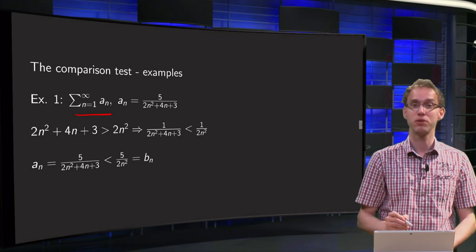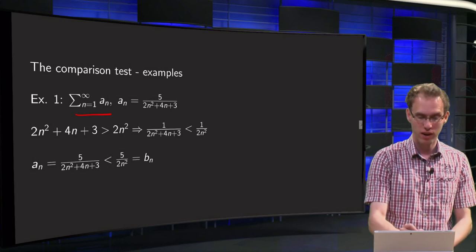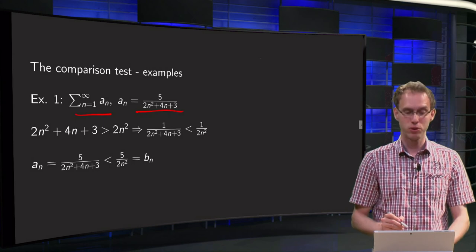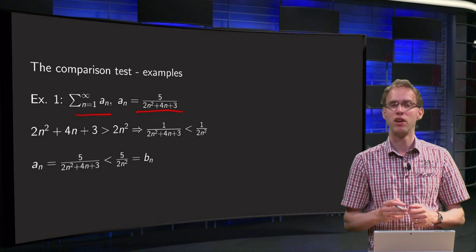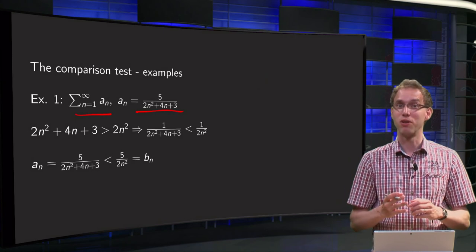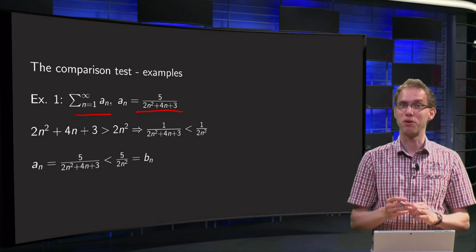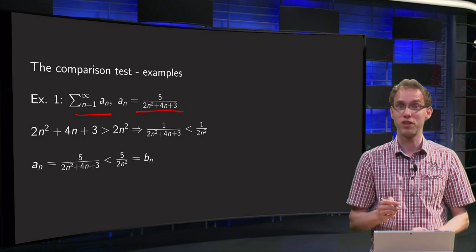Suppose we have the series 1 to infinity of an, where an equals 5 over 2n squared plus 4n plus 3, and we want to know whether it converges or not. In this case you could do the integral test, but that's quite a lot of work. The comparison test works much faster, as we will see.